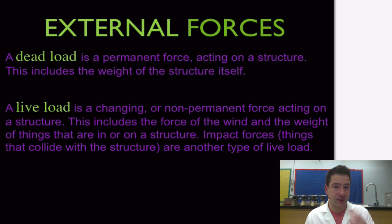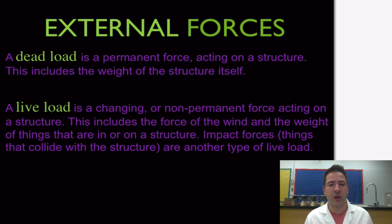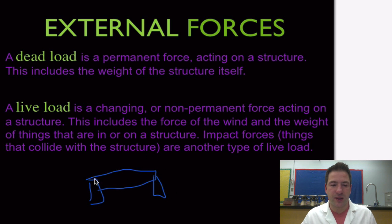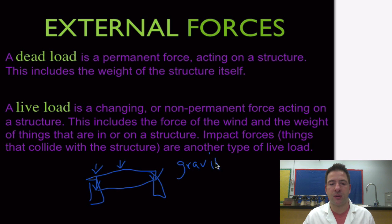There are two types of external forces. The first is a dead load — it's a permanent force acting on a structure. This includes the weight of the structure itself. For example, a tabletop: the tabletop provides stress down on the legs. It's the mass of the structure and the weight — and remember, weight includes gravity — causing a dead load, or stress on the structure. We have to make sure the structure can handle its own weight.